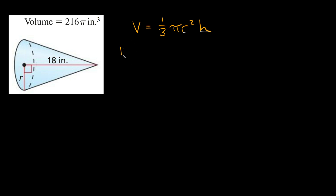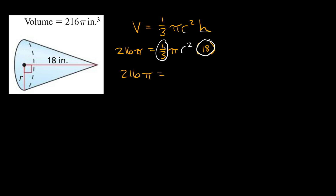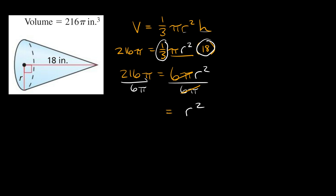The volume is 216π, so we plug that in: 216π equals one-third times π times r squared times 18. Simplifying one-third times 18 gives 6, so we get 216π equals 6π r squared. To isolate r squared, divide both sides by 6π. The 6π cancels on the right and the π cancels on both sides, leaving r squared equals 216 divided by 6, which equals 36.